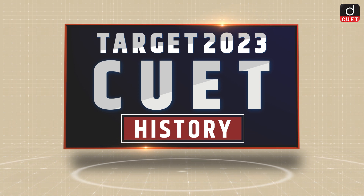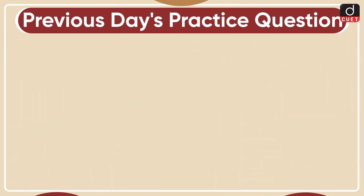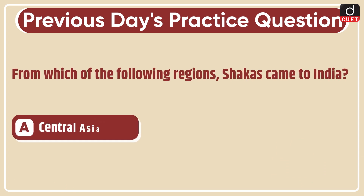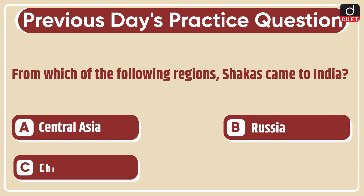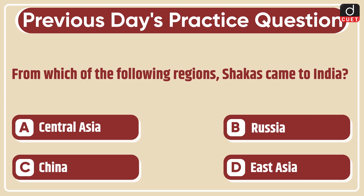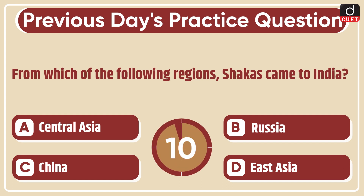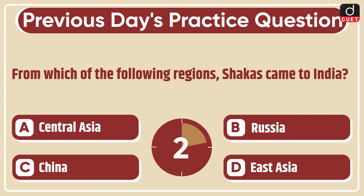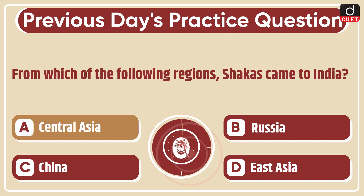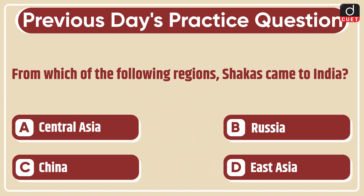Hello everyone, welcome to Target's CUET history episode. Let's begin with the previous day's practice question. The question was: from which of the following regions did the Shakas come to India — Central Asia, Russia, China, or East Asia? The correct answer is option A, Central Asia.